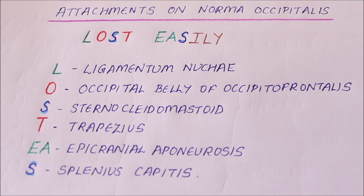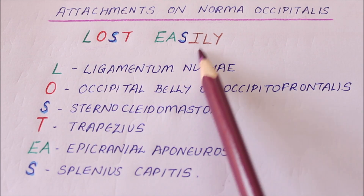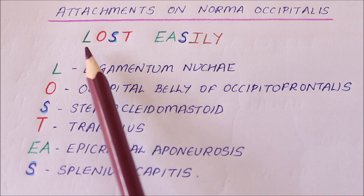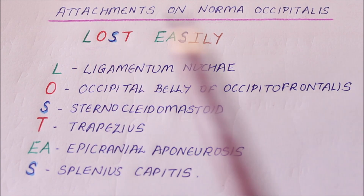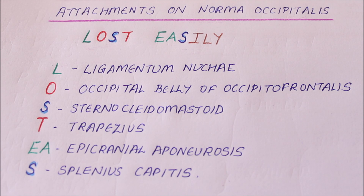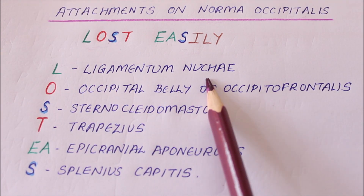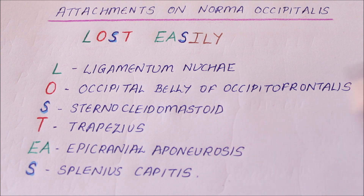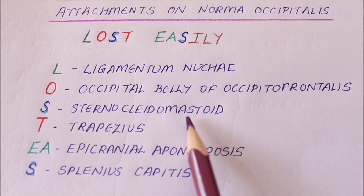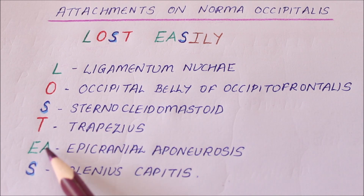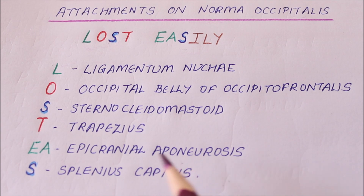An easy way to remember the attachments on the norma occipitalis is the mnemonic 'LOST EAS': L for the attachment of the ligamentum nuchae, O for the origin of the occipital belly of the occipitofrontalis muscle, S for the insertion of the sternocleidomastoid, T for the origin of the trapezius, EA for the attachment of the epicranial aponeurosis, and S for the insertion of the splenius capitis.